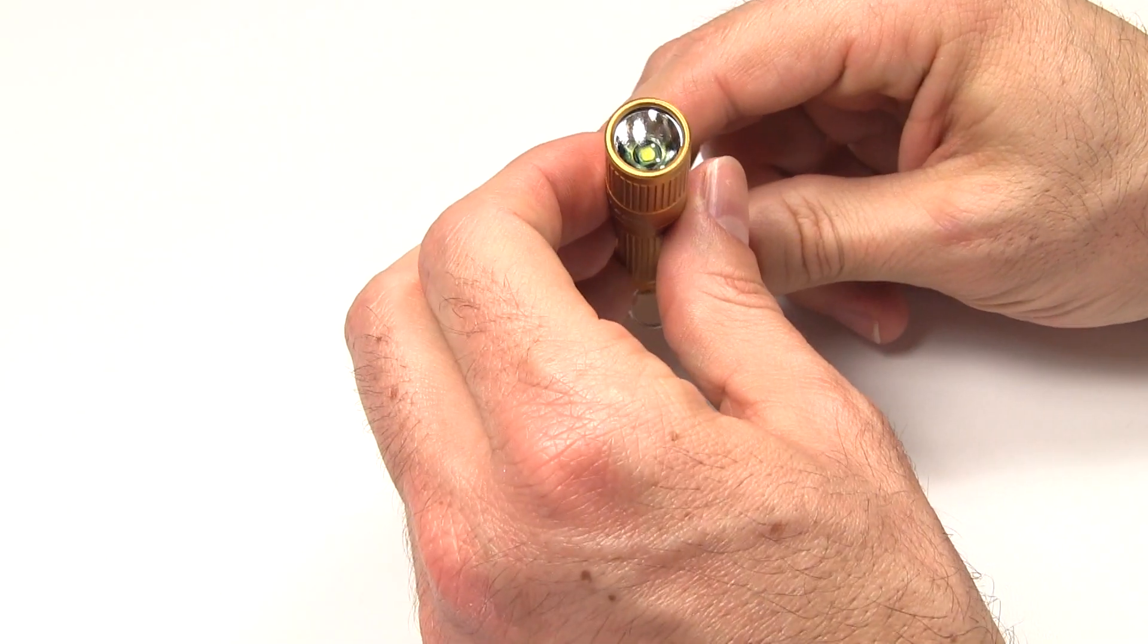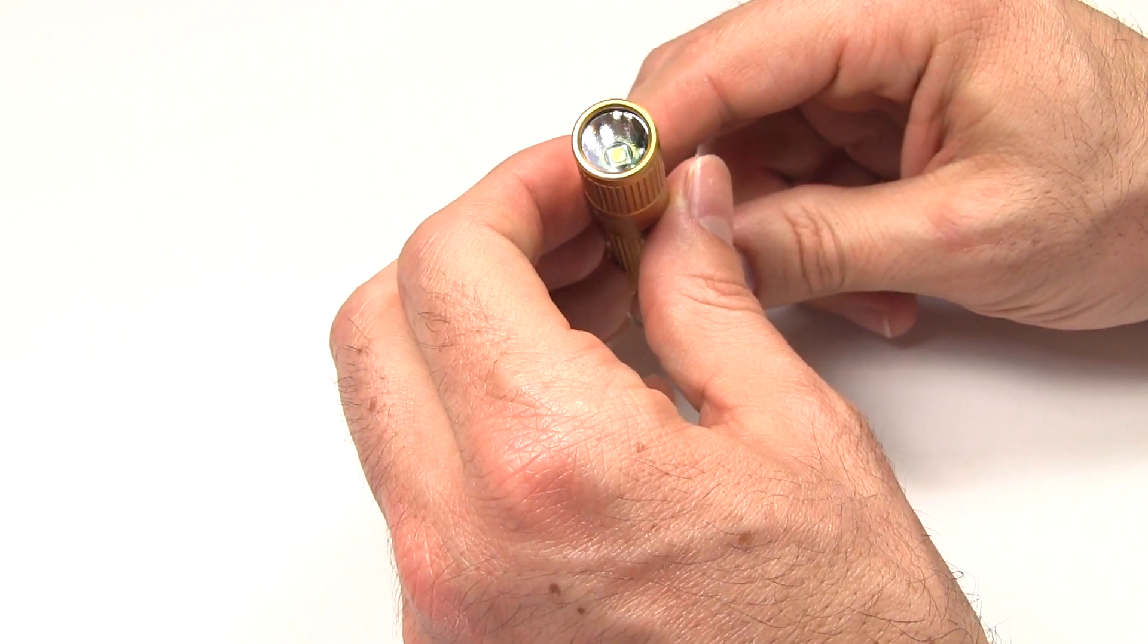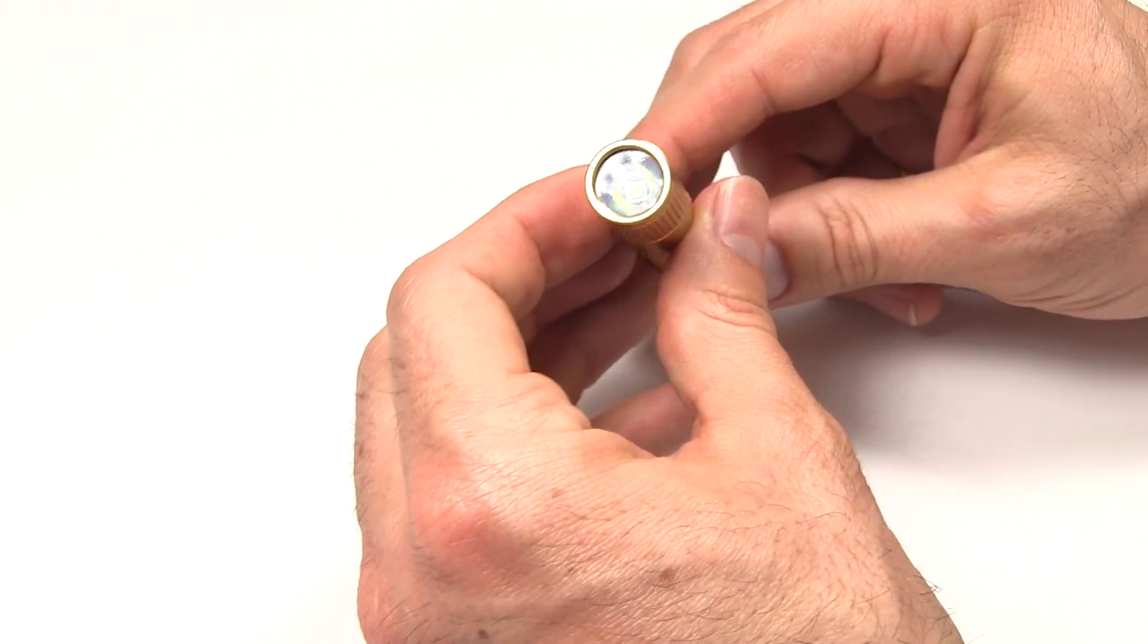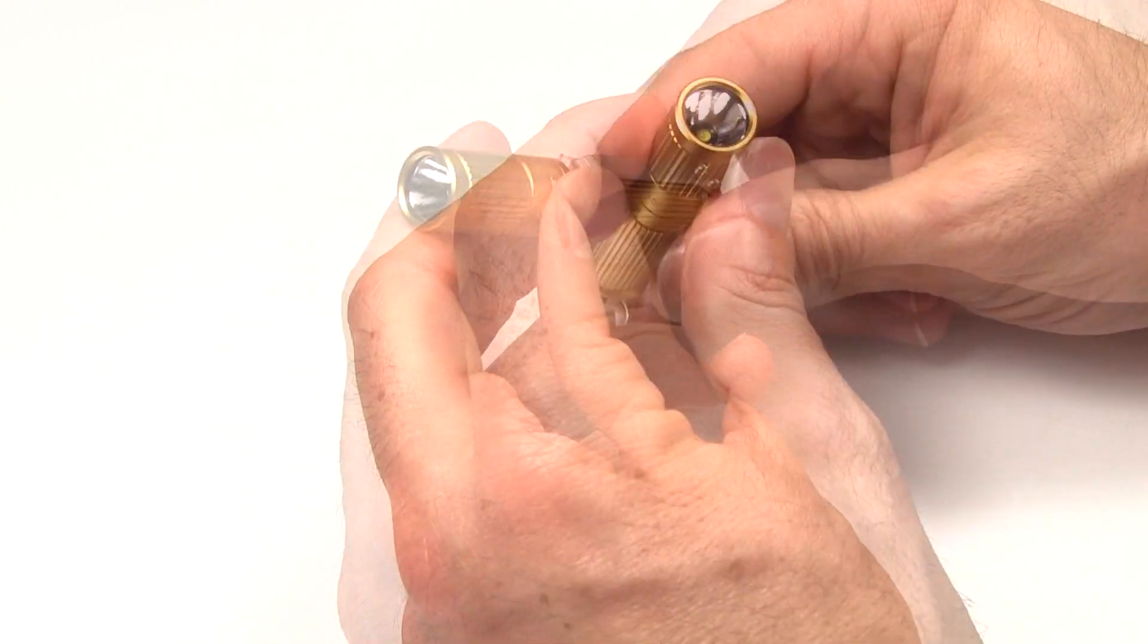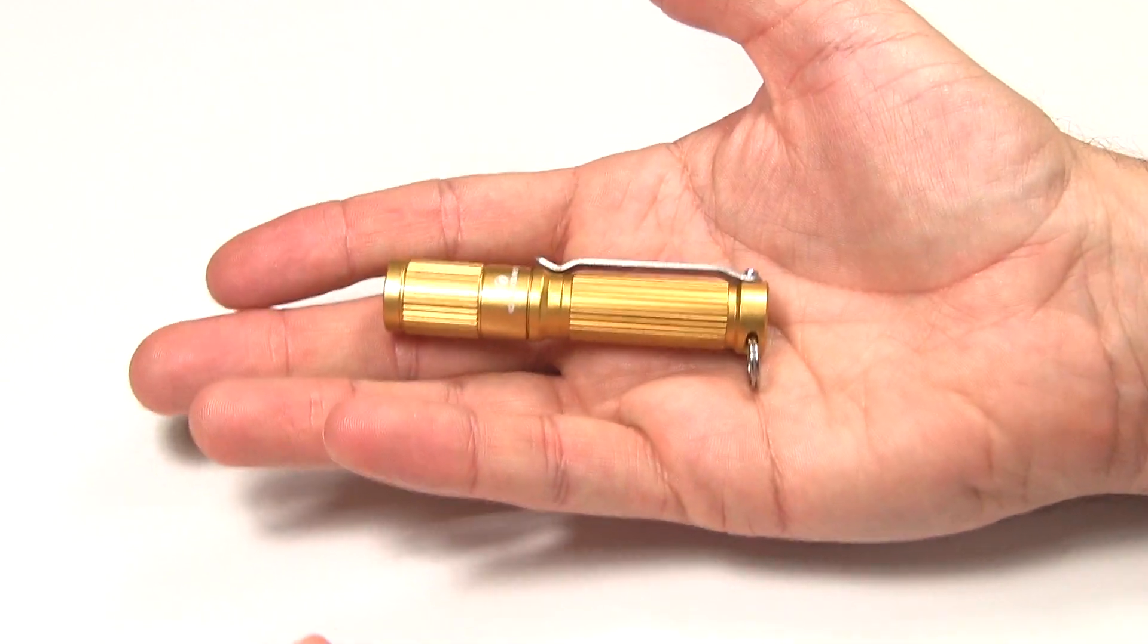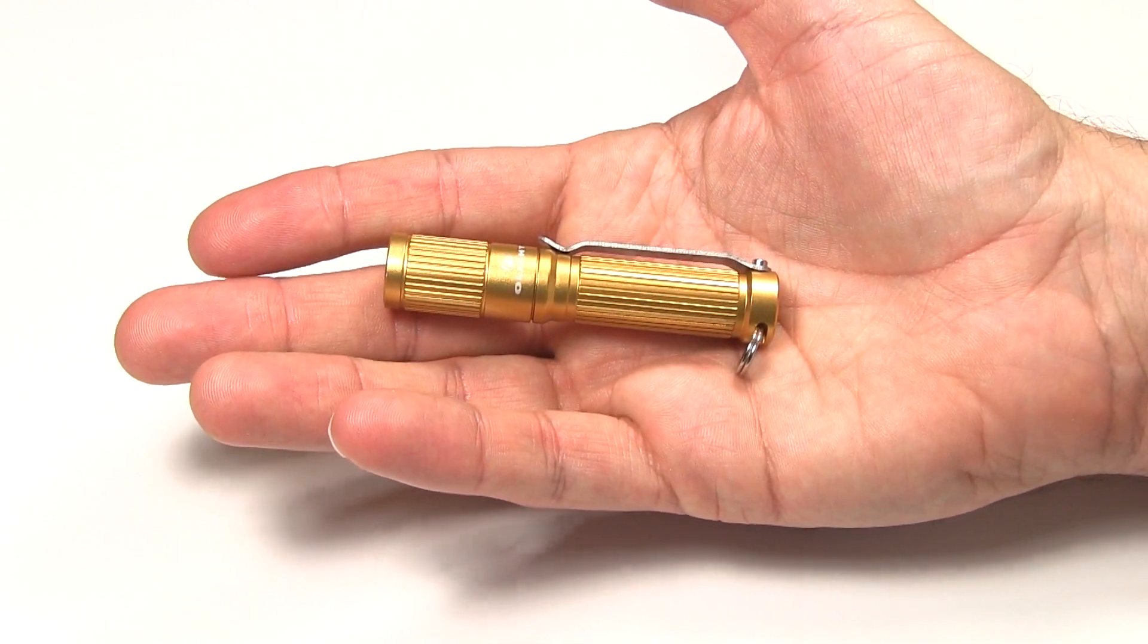Turn the lights back on. Up in the front here, we have the Cree XPG R5 LED and there is a textured reflector. That is about it for the design of this light. It's very well designed, nice, lightweight, great little everyday carry light.